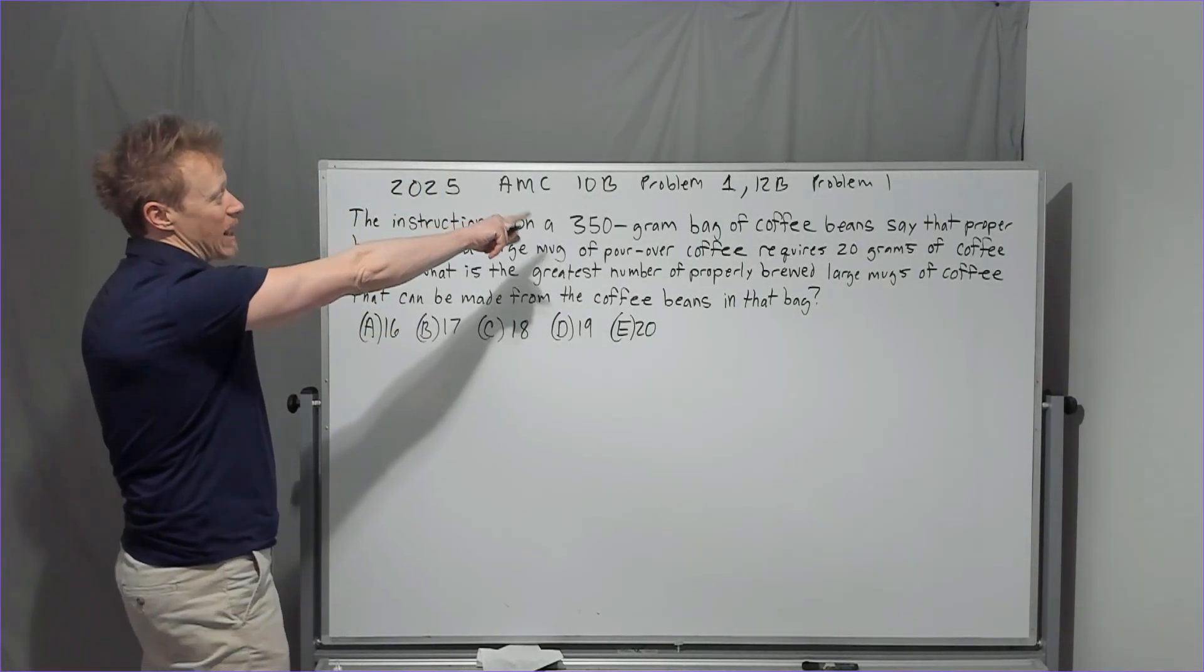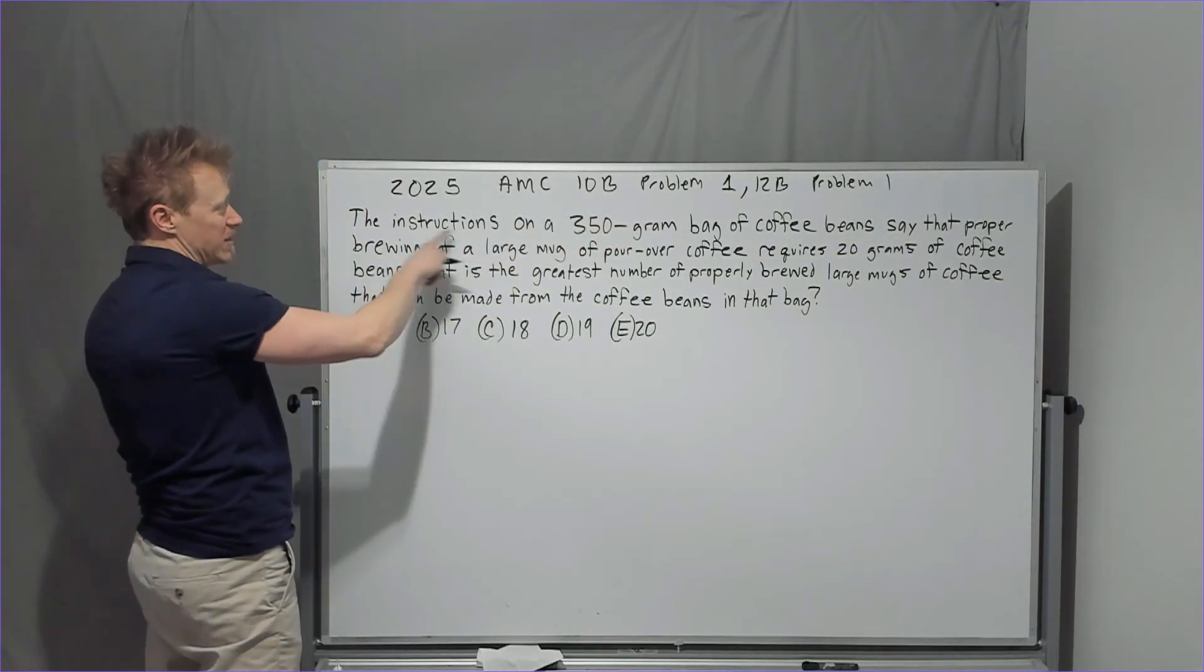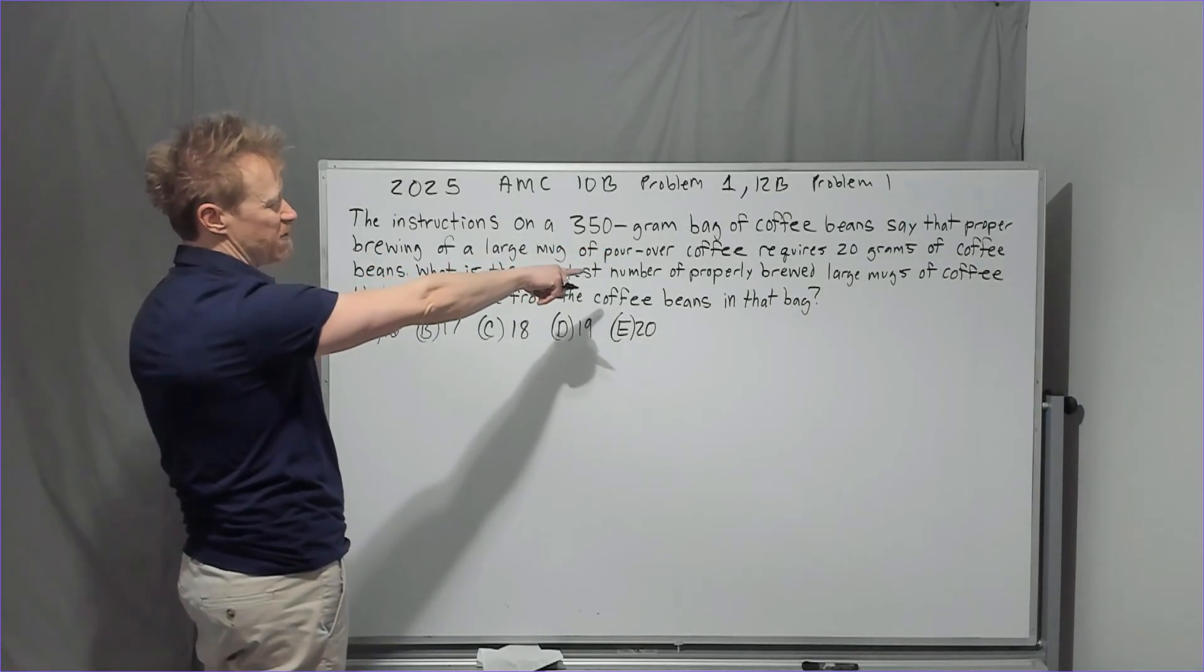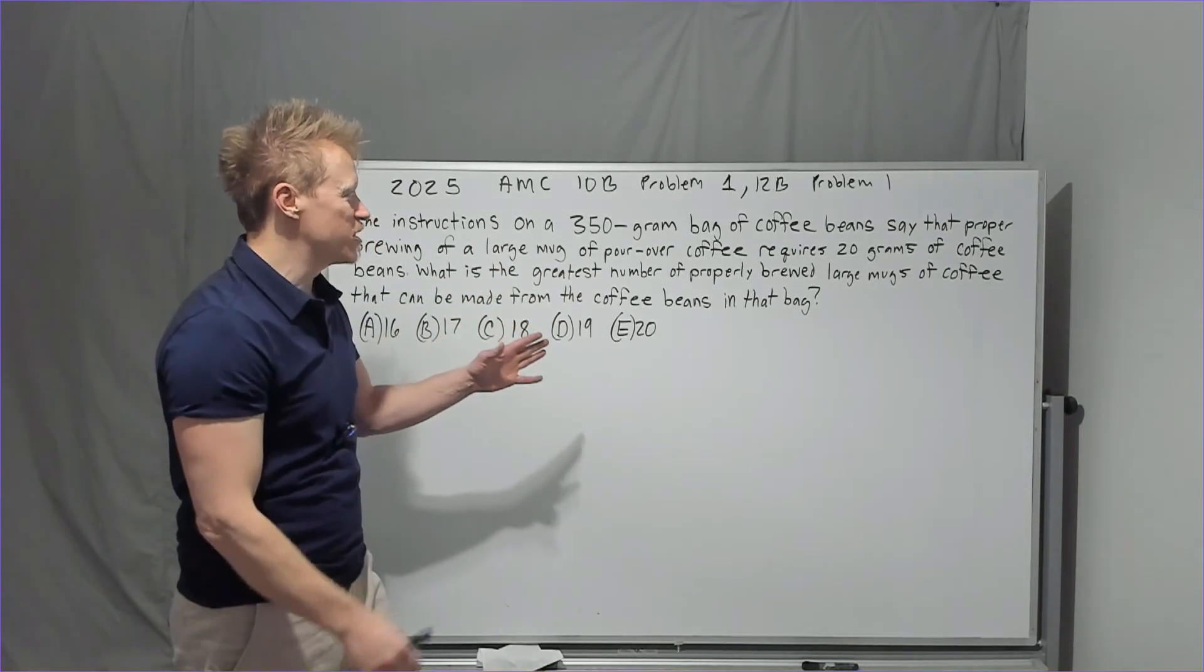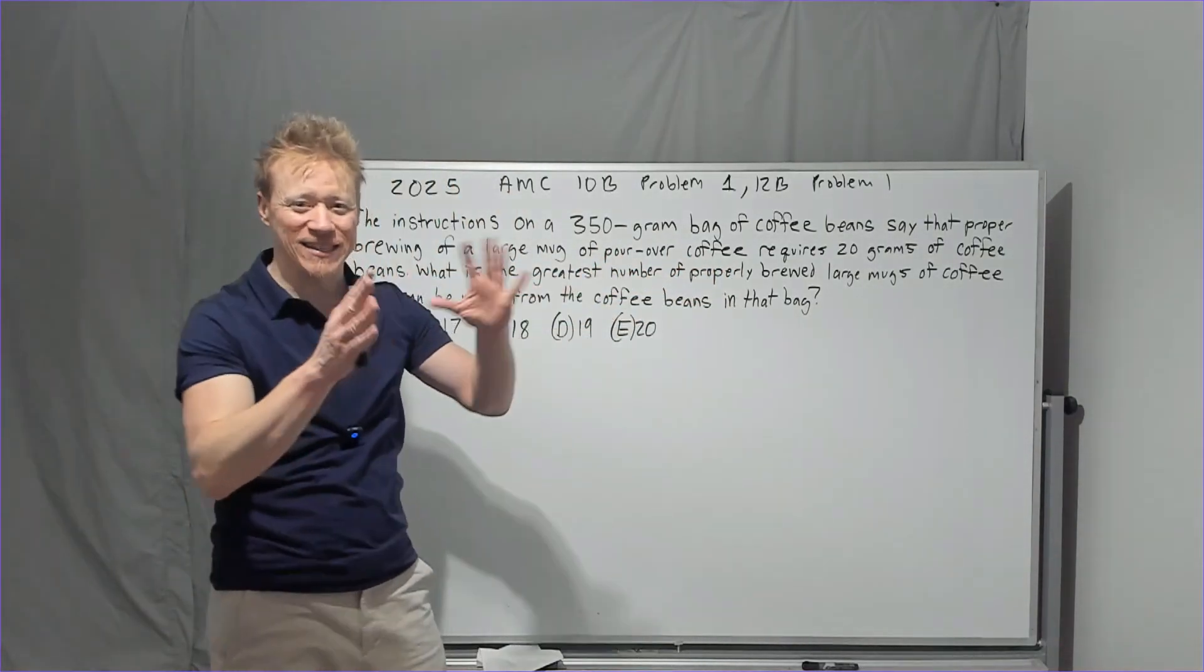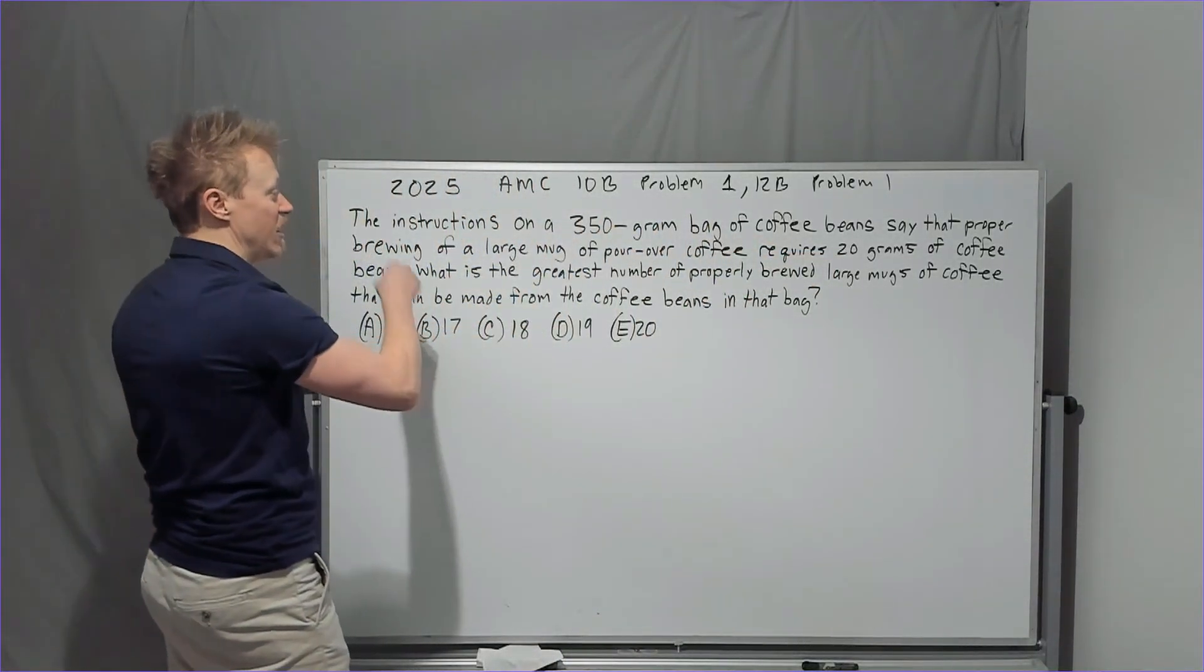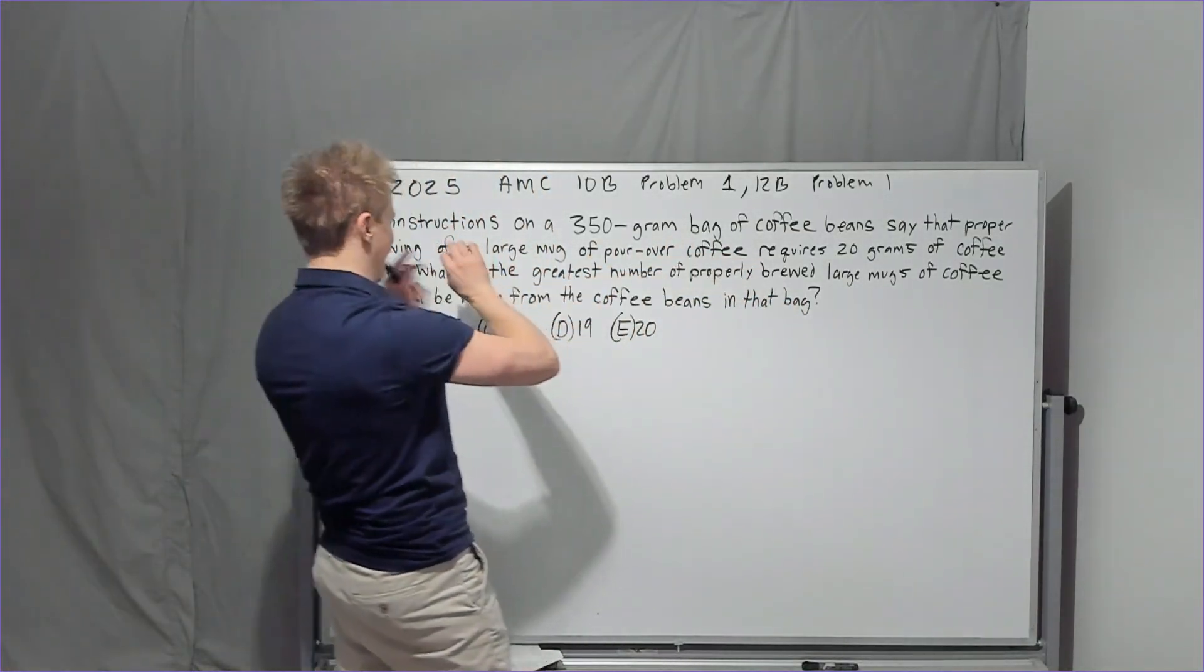Okay. So 2025 AMC 10B problem one, 12B problem one, the instructions on a 350 gram bag of coffee beans say that proper brewing of a large mug of pour over coffee. I think what's bad about this, not a hard problem, but there's so many little words like proper brewing, you know, of a large mug, of pour over coffee. You're trying to pay attention to all these little details just in case there's some weird one in it. Right. And so you're like, it requires 20 grams of coffee beans.